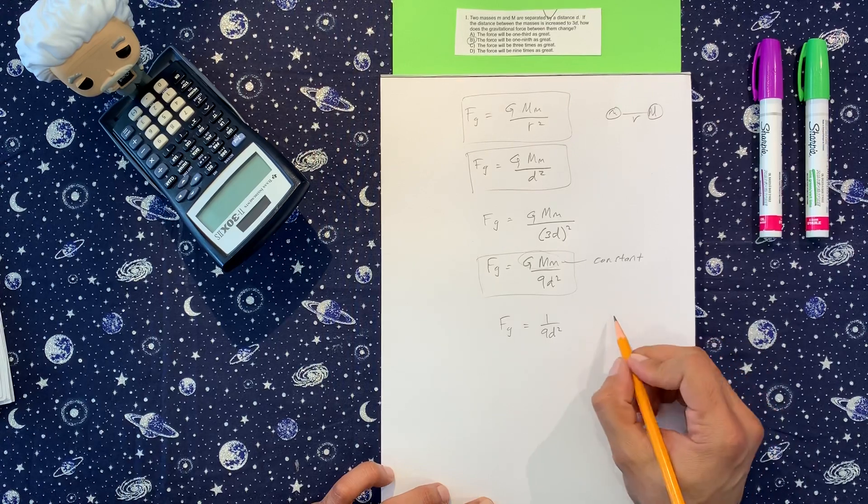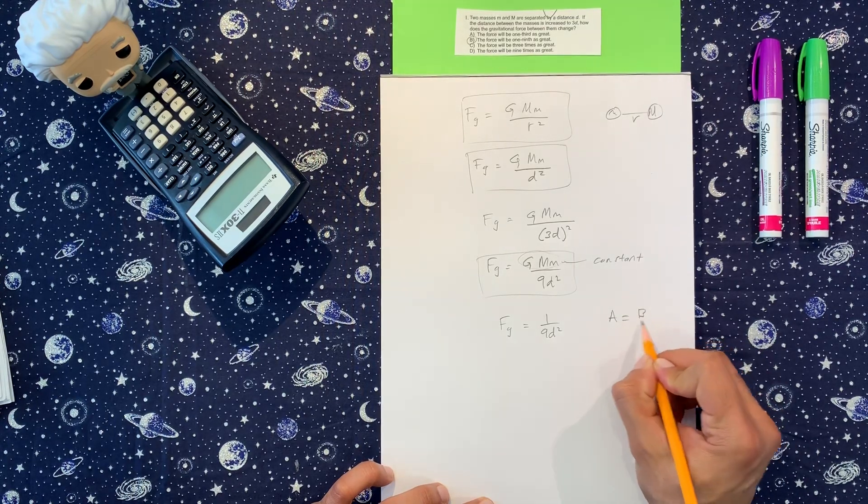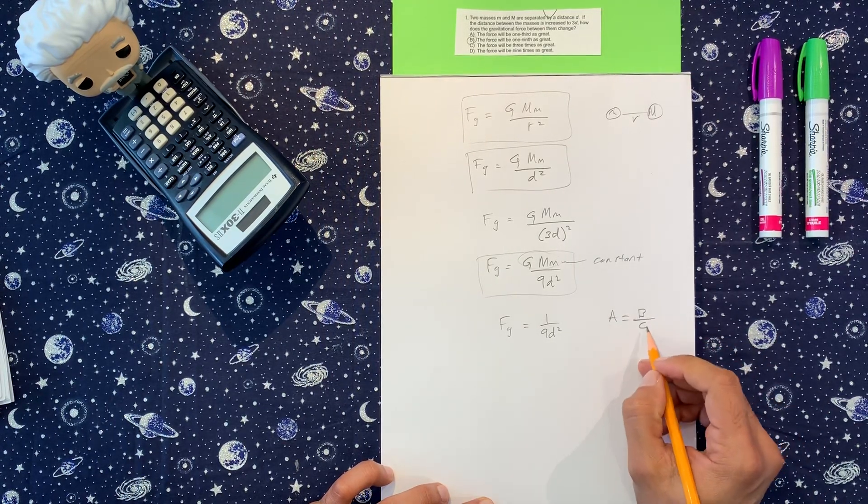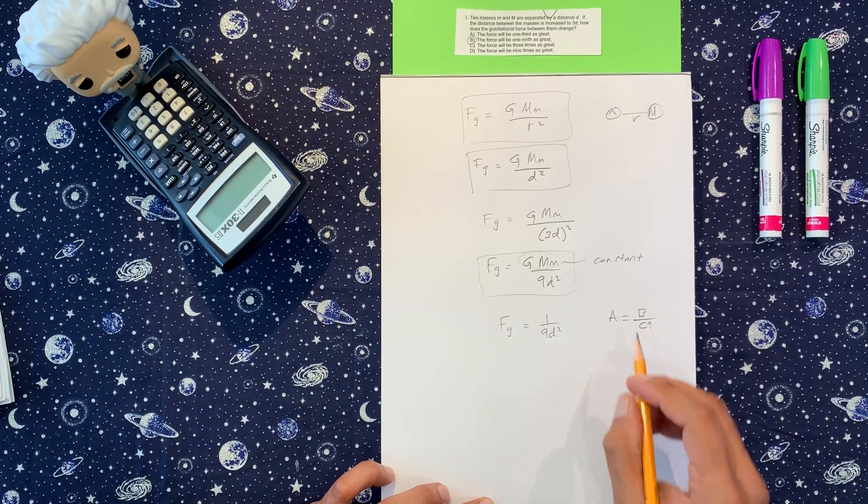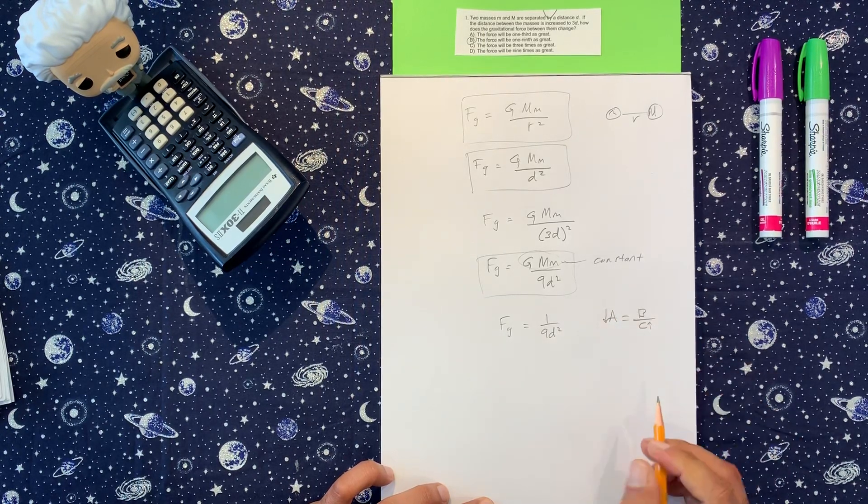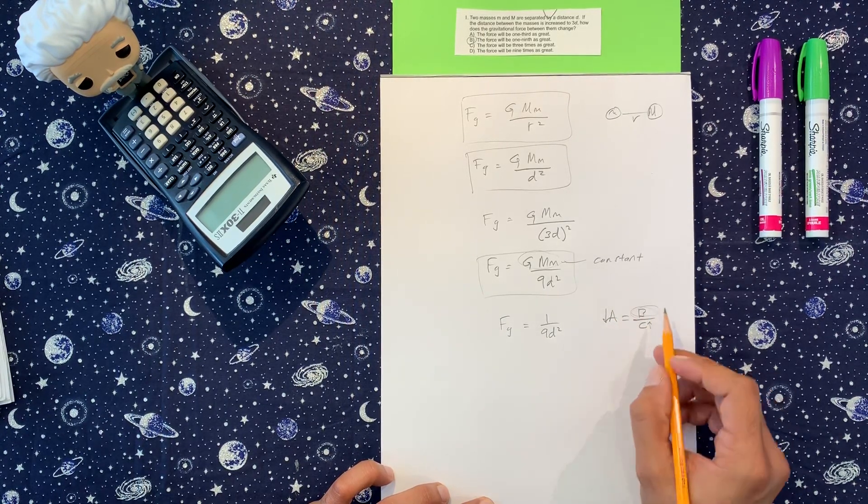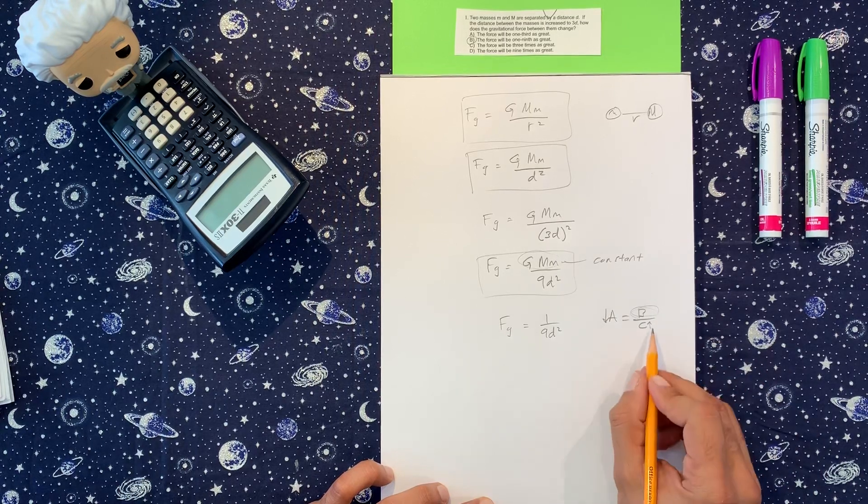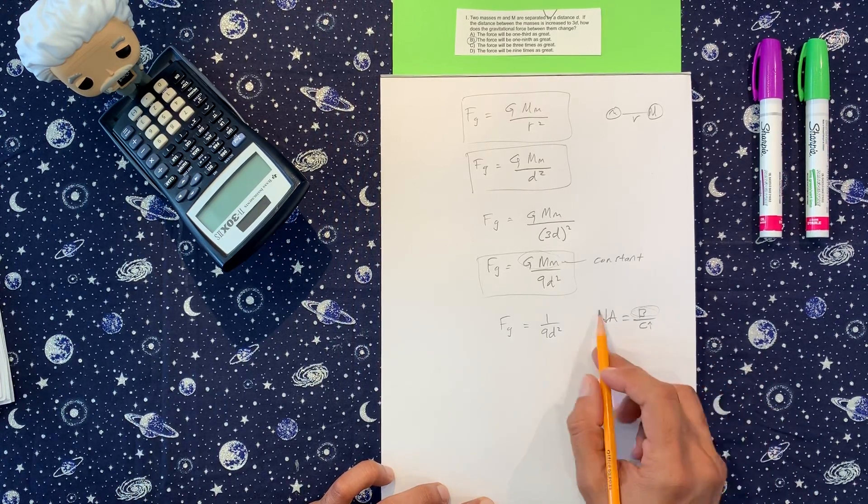I'm going to do an example here. If we increase C, that means we have to decrease A. And B is constant. So these are reciprocals of each other.